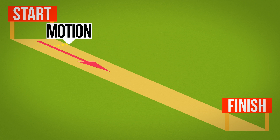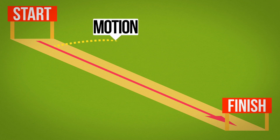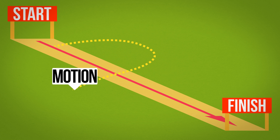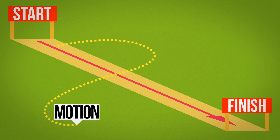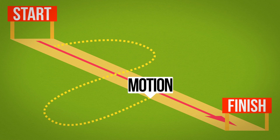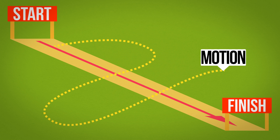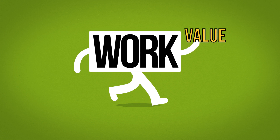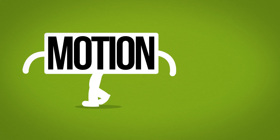The third waste is motion: the extra steps taken by people to accommodate an inefficient process layout, including defects, reprocessing, overproduction, or excess inventory. To move and add value is called work. To move and not add value is called motion.